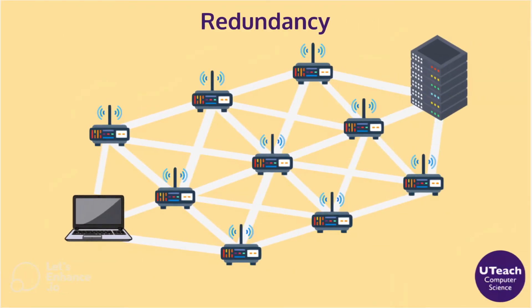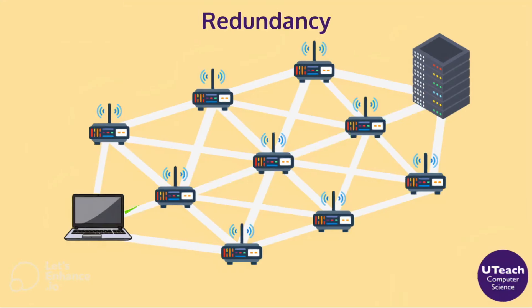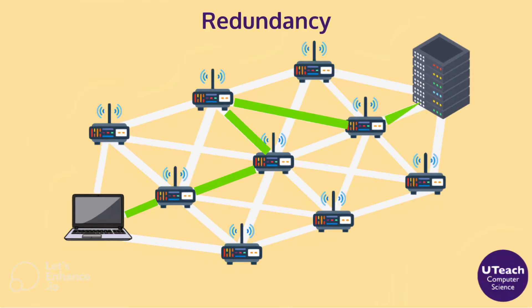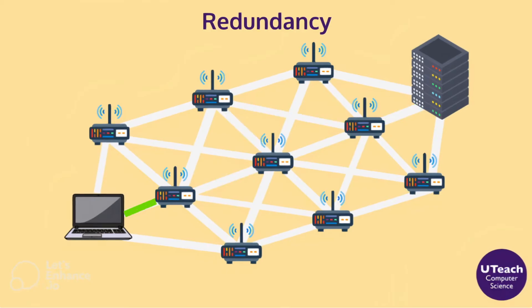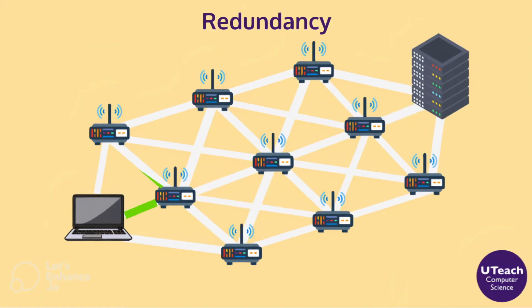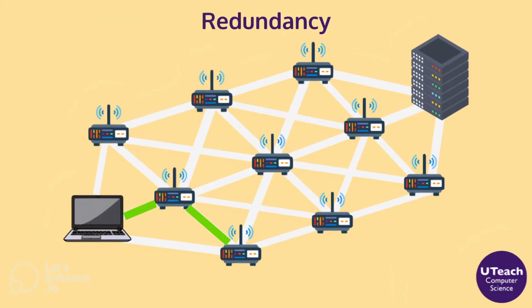In most cases, there is more than one pathway through which a transmission can be sent in order to reach its destination. This allows the network to not only be fast and efficient by finding the most optimal route, but also robust enough to continue functioning even if part of the network fails and a pathway is cut off.